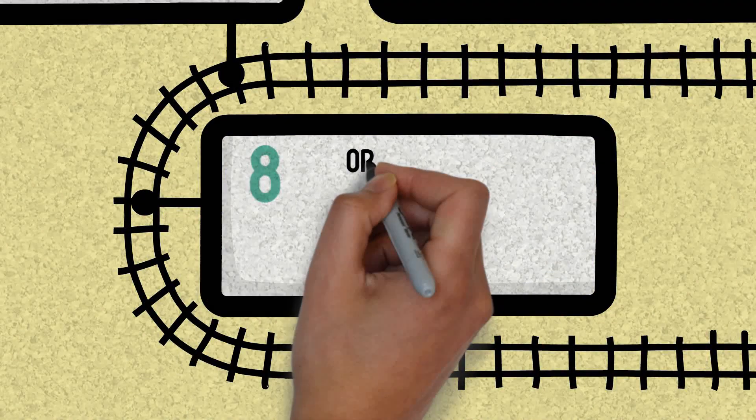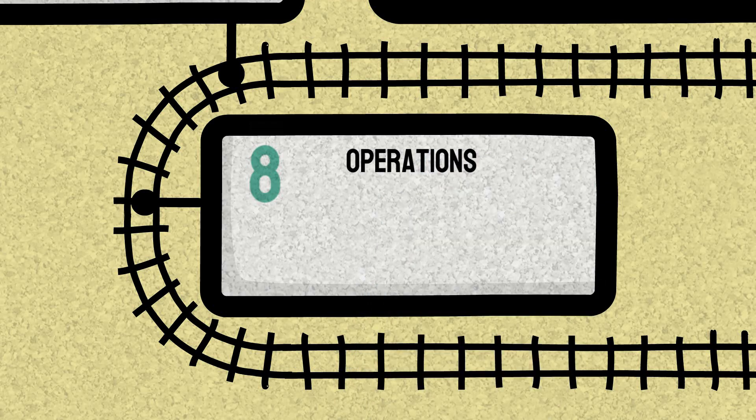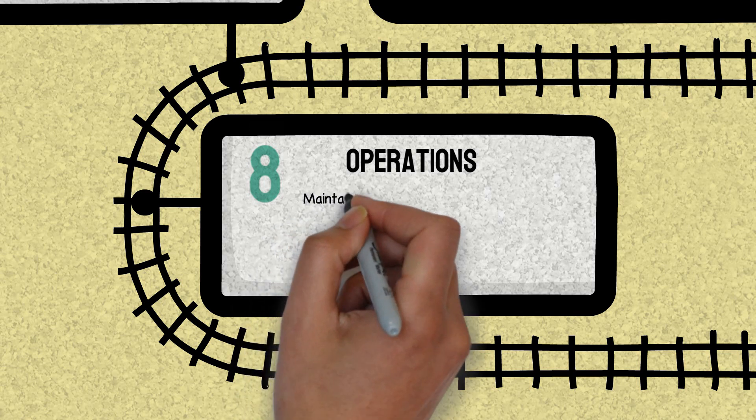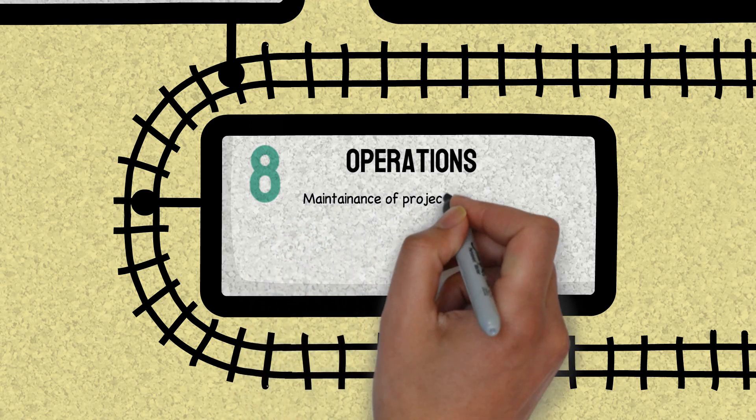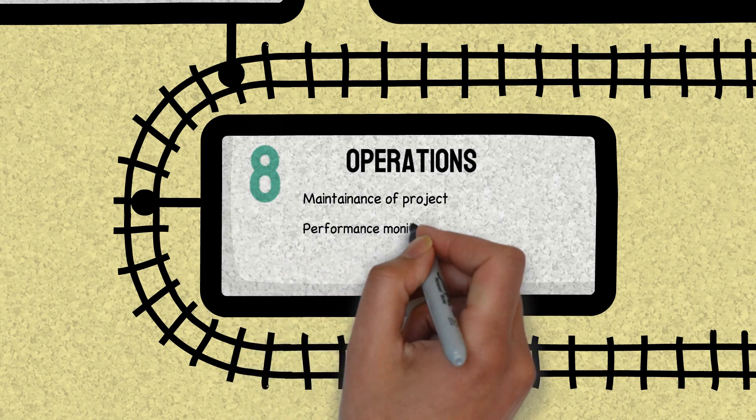Once this deployment part gets over, we need to monitor its performance like how it is working in this real-time scenario after deployment. And that project should be maintained throughout its requirement period. So whatever the business requirement we have throughout this period, we need to monitor, we need to maintain this project, we need to maintain the performance, accuracy, everything.